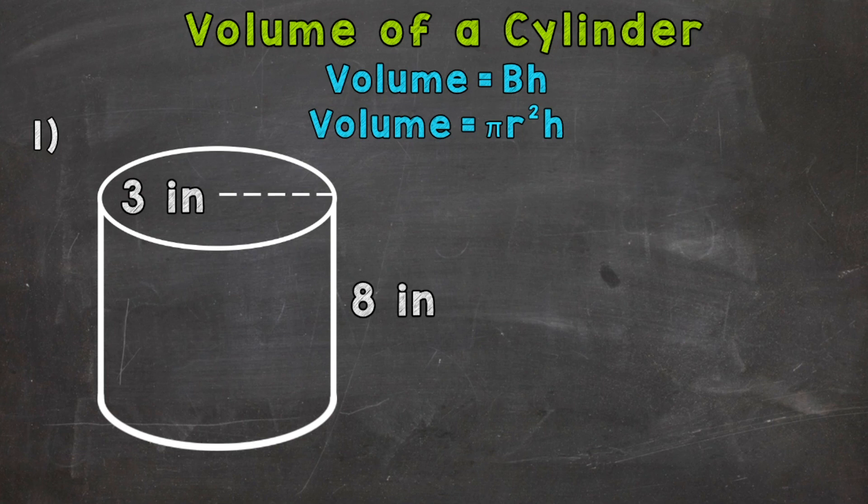So the top one says volume equals a capital B times h. So that capital B means the area of the base times h, which is height. Now, the formula below that says volume equals pi r squared, so pi times radius squared times height. Now, pi r squared, that's the formula for the area of a circle. So in the case of this cylinder, our base is a circle. So the area of the base, that capital B, expanded out to the formula we're going to use, pi r squared, would give us that formula that's below.